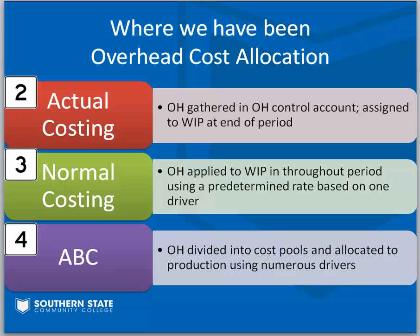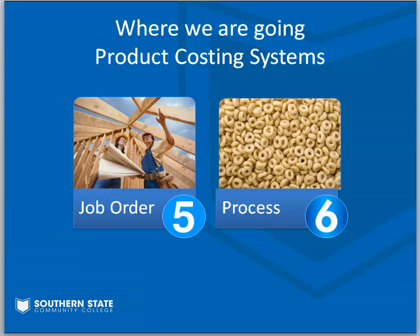Now we're putting that behind us and looking at what a whole system of product costing would be. If we take all the components of a product cost — direct labor, direct material, and overhead — and put them back together, these are the systems we're looking at. In chapter five we're going to talk about a job order system, and in chapter six we'll talk about a process costing system. A job order system is used by specialty manufacturing firms or any business that produces output that is not similar in nature, or produces in small batches — one or just a handful of items. Construction would fit that bill.